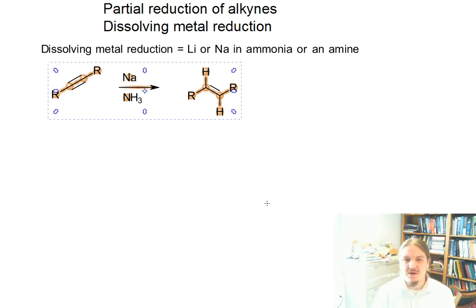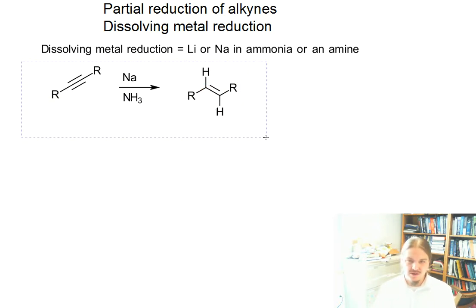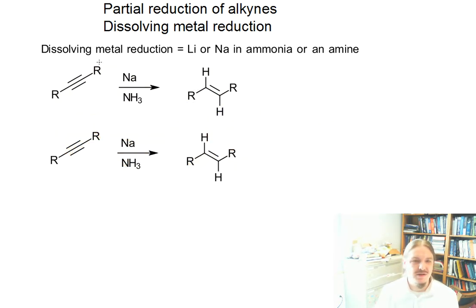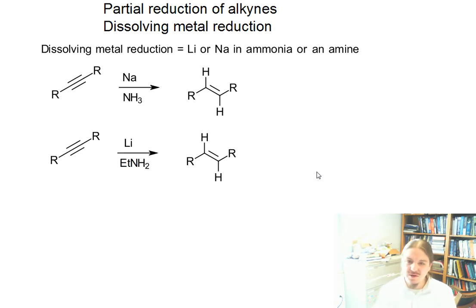In this video, we're going to talk more about the dissolving metal reduction of alkynes. In a previous video, I introduced this reaction — having sodium and ammonia, or lithium and an amine, react with an alkyne. If the alkyne is internal, you get the trans-alkene as a product. You might also see lithium instead of sodium, and a primary amine like ethylamine instead of ammonia. There need to be hydrogens on the amine because it's the amine that serves as the source of hydrogen atoms added to make the alkene.